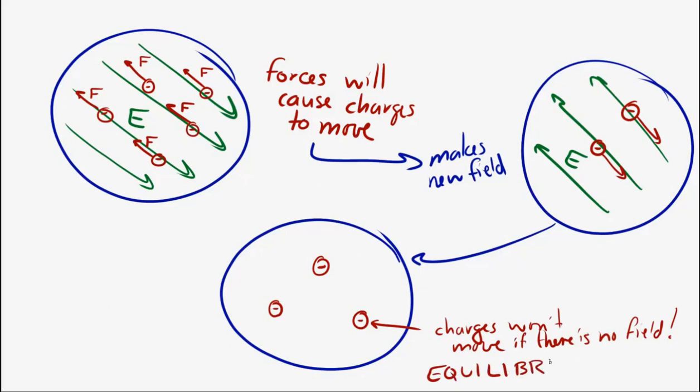Now, the way that I've described it, it makes it sound like if there's an electric field in there, then the charges move around and there's a new field. Then they move around and there's a new field. And they keep doing that over and over again until there's no field. In fact, the process is very, very fast. The charges will redistribute themselves almost immediately so that there is zero field inside of a conductor.